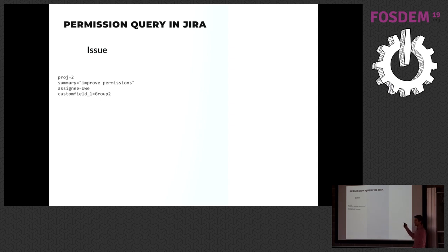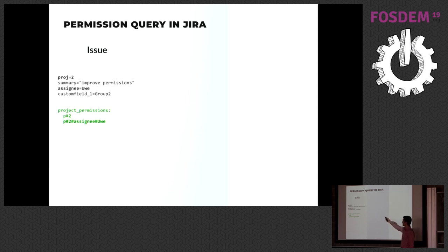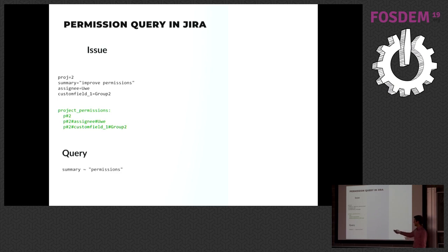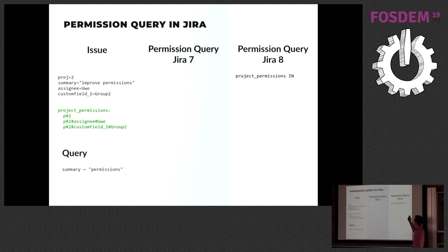We added a new field called 'project_permissions' where we index combinations of values — for example 'p2' for project two, 'p2_assignee_uwe' for the pair of project and assignee, and 'p2_customfield1_grouptwo' for the pair of project and custom field. When searching, JIRA adds a permission query to limit results to what you're allowed to see. We build two queries: the old-style boolean query, and the new TermInSet query. TermInSet matches as long as one element in the query matches one element indexed in the new project_permissions field.